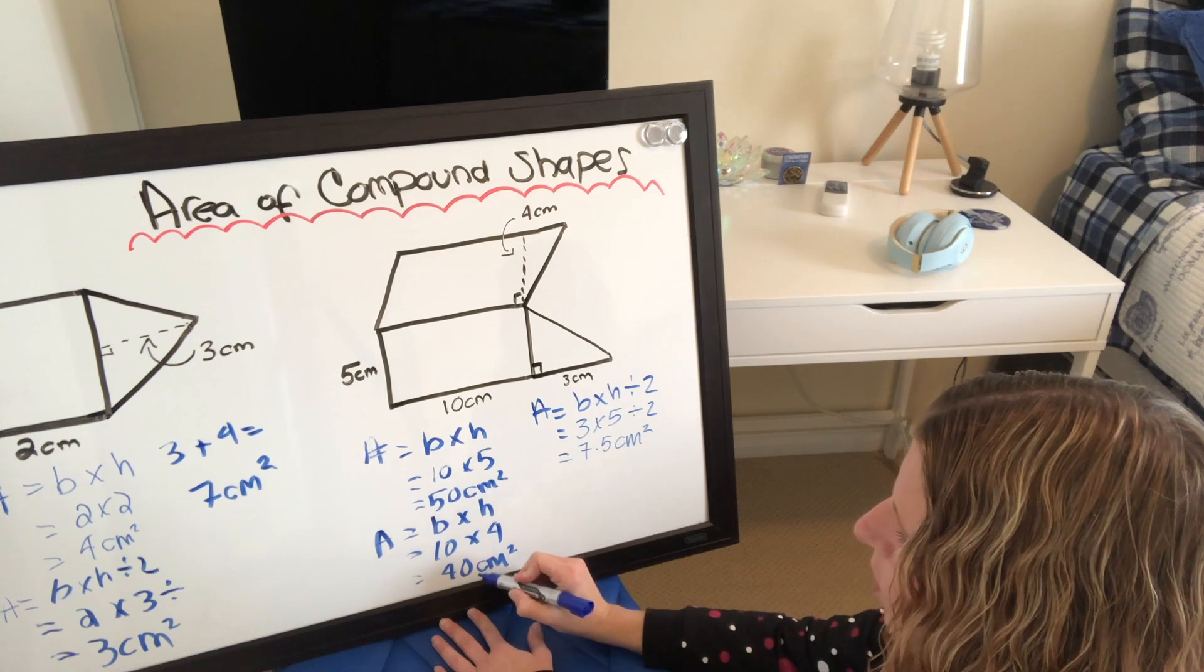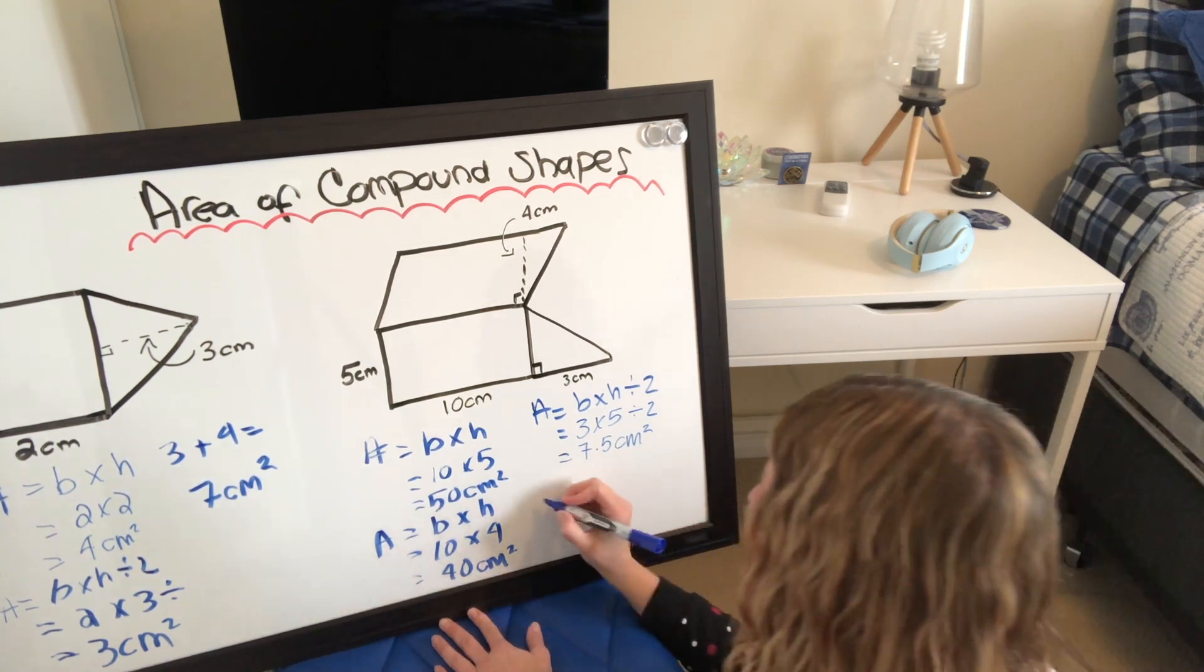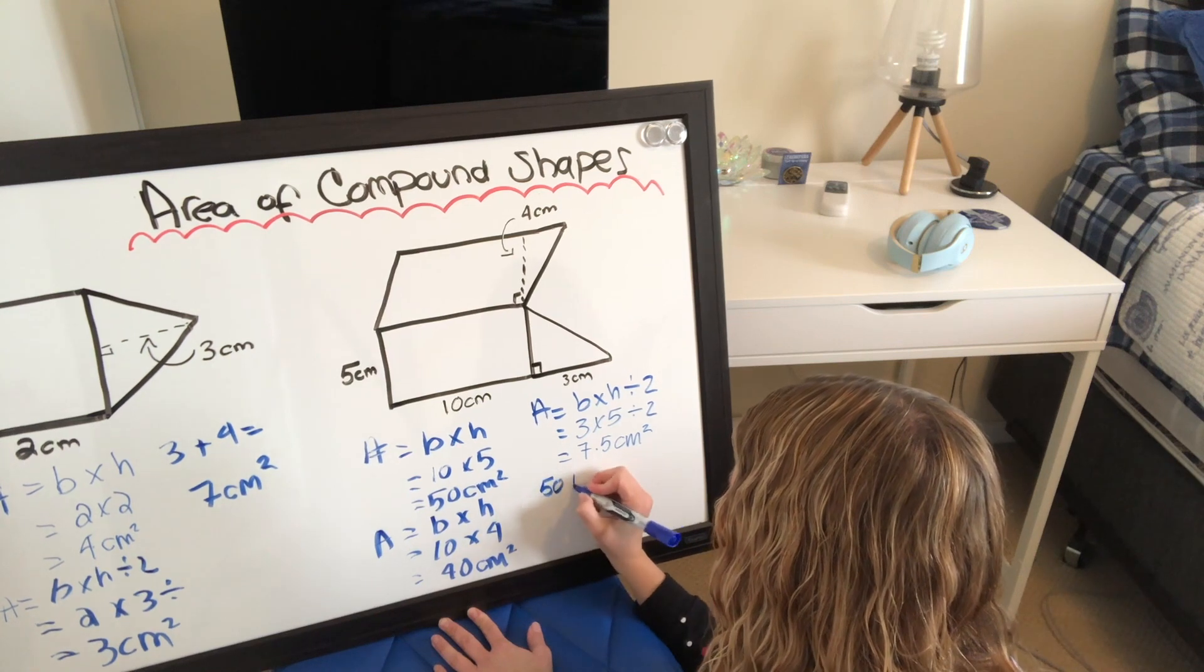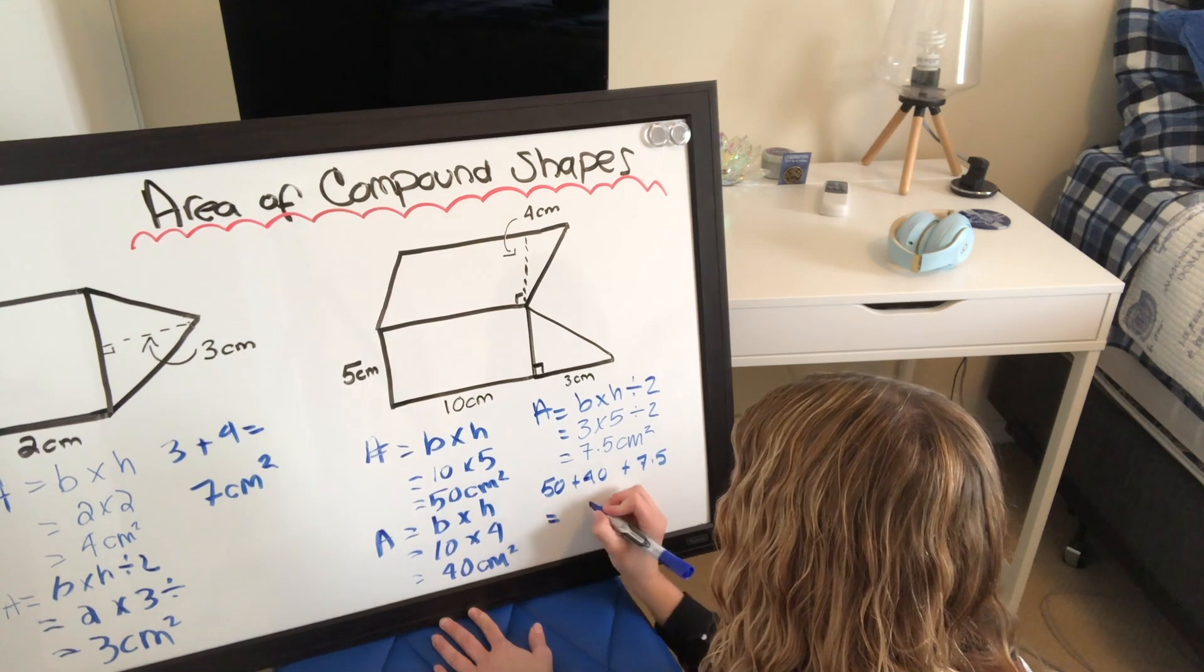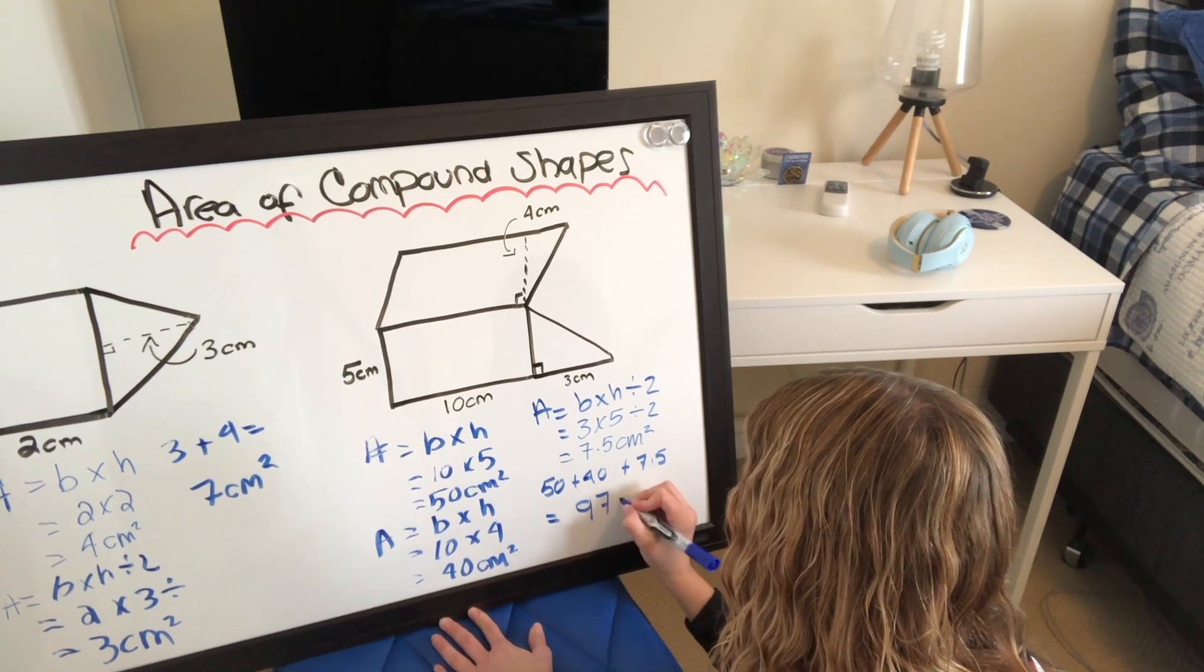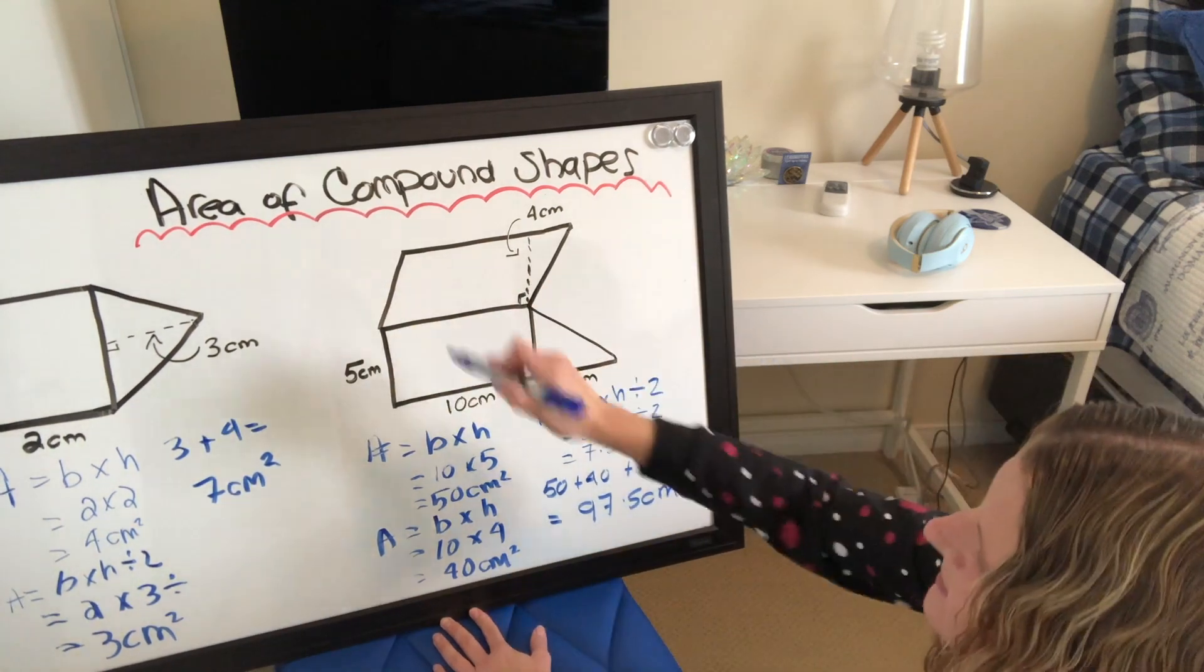So now we're going to add all these up together. So 50 plus 40 is 90 plus 7.5. So 50 plus 40 plus 7.5 equals 97.5 centimeters squared for this entire shape.